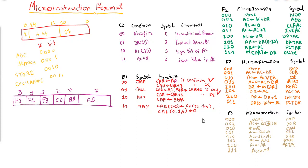So these are the individual fields of the micro instruction format. In the next video, we will try to convert a small program into binary format using this same table.